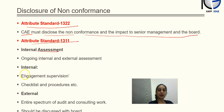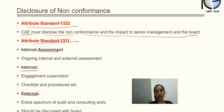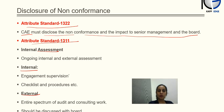There has to be ongoing internal and external assessments of quality. Internal assessment includes engagement supervision, checklists and procedures — for example, audit teams following certain checklists with time-to-time supervision by seniors. External quality checks can be done through assessment of the entire spectrum of audit and consulting work, which should be discussed with the board. When internal assessment does not seem sufficient, external assessment can be done to cross-check the entire scope. Any incident of biasness or anything impairing the independence of the auditor needs to be reported to management.